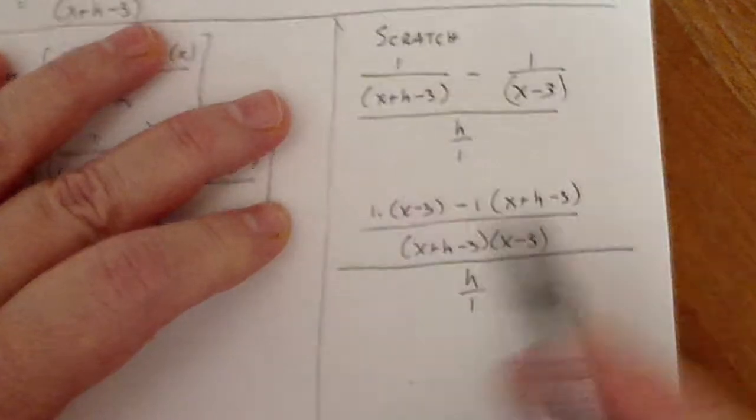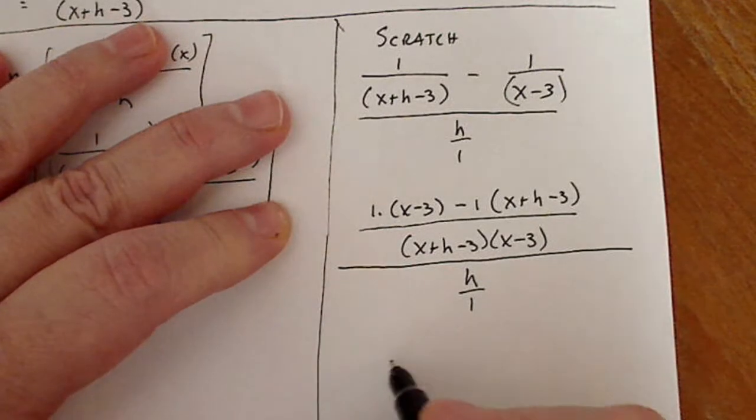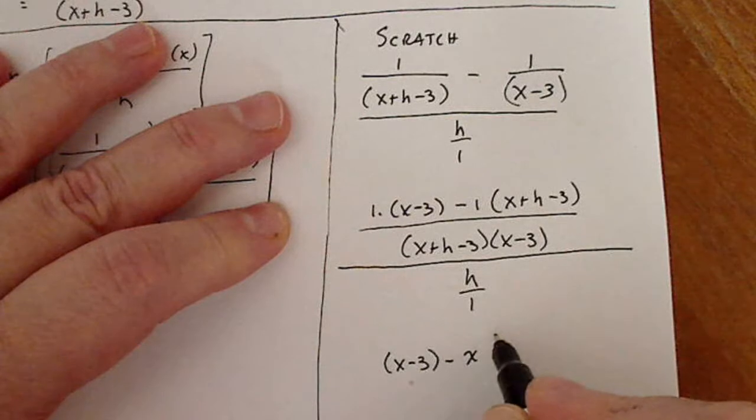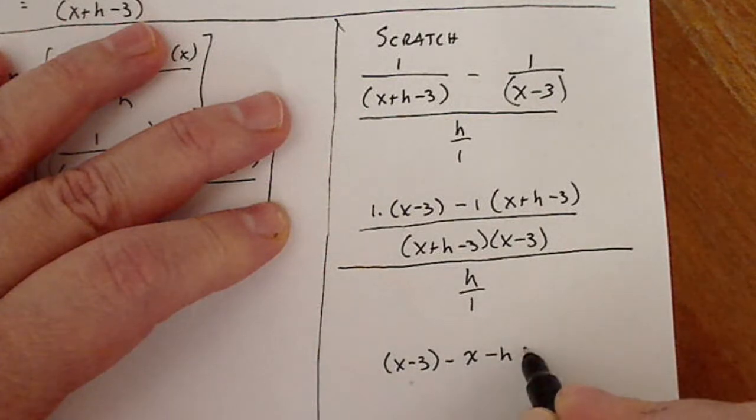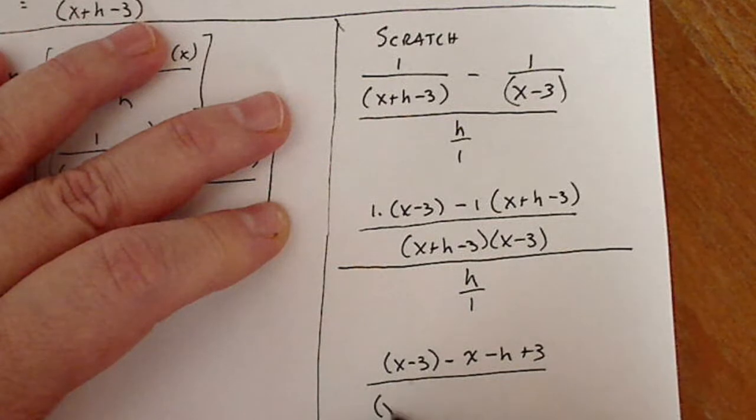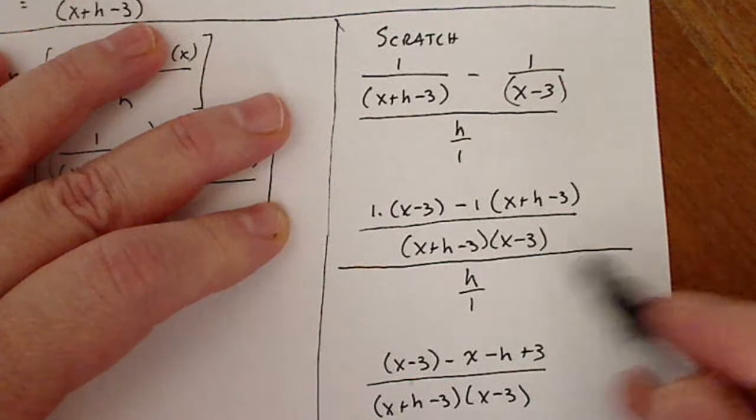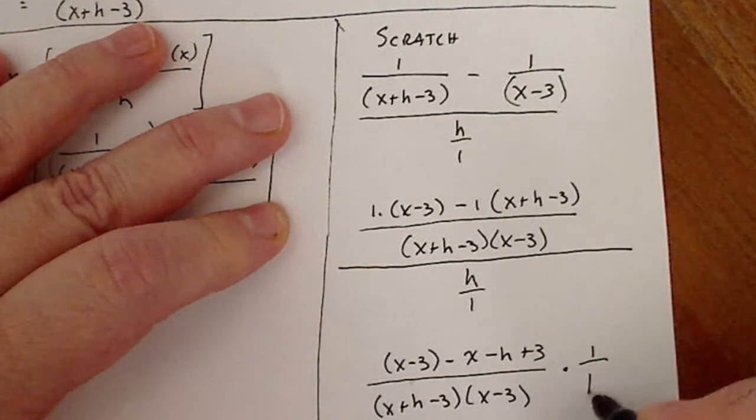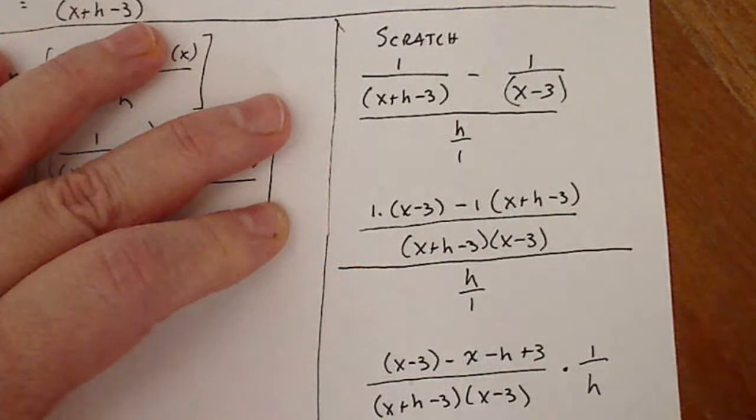Now what I'm going to do is simplify the numerator here a little bit. So I have x minus three minus x minus h plus three divided by x plus h minus three x minus three. Now is the time I want to take the reciprocal of the denominator and multiply by it. Just leave it. Just bring it along.